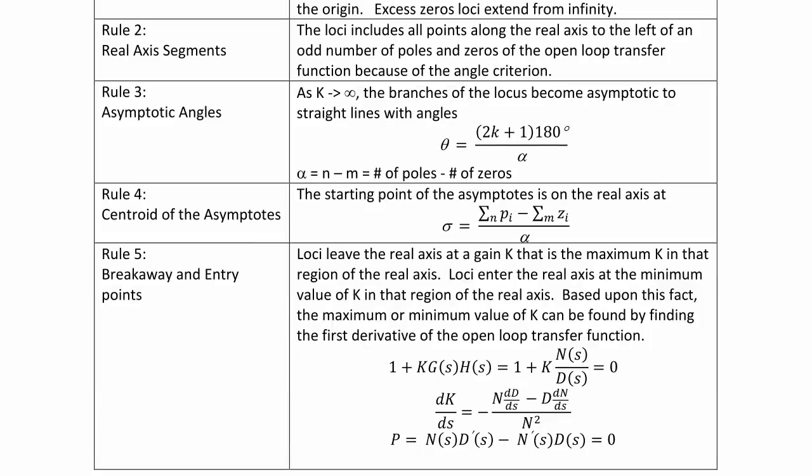Rule 3, Asymptotic Angles: As k approaches infinity, the branches of the locus become asymptotic to straight lines with angles θ = (2k+1)180°/α, where α = n - m, or the number of poles minus the number of zeros.